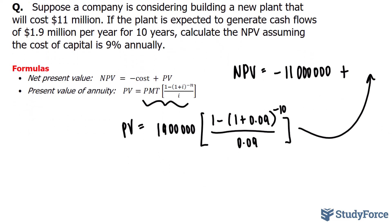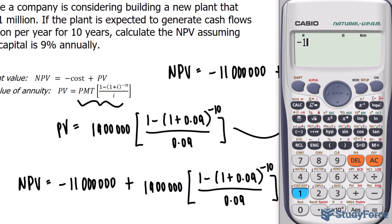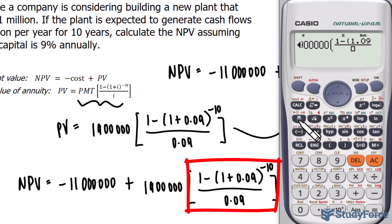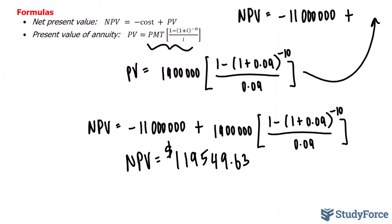Let's do it all at once. Our final equation should start to look like this — now we'll put this equation into our calculator. We have negative $11 million plus $1.9 million, multiplied by the expression: 1 minus 1.09 raised to the power of negative 10, divided by 0.09 in the denominator. As you can see, we get a net present value that's positive — in fact, it is $1,193,549.63. Because the NPV is positive, we can conclude that this is a good investment and that the company got the project cheap.